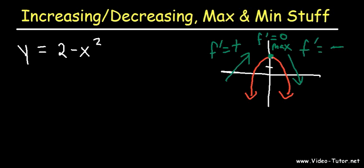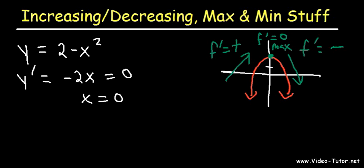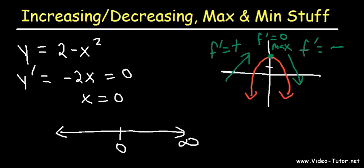For a problem like this, what you need to do is find the first derivative and set it equal to 0. The derivative of 2 is 0, and the derivative of negative x squared is negative 2x. So if you set it equal to 0, you get x is equal to 0 if you divide both sides by negative 2. So if we make a number line, let's plug in some test points — let's plug in a number that's greater than 0.